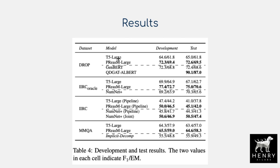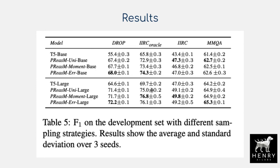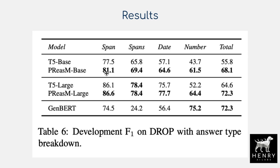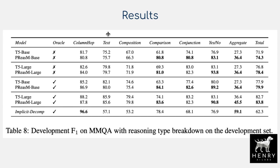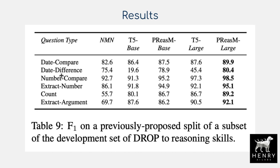Further gains are seen on IRC and MMQA as well, though they vary in magnitude. The paper also breaks down results by reasoning skill type — date, number, spans — and by curriculum learning strategy (momentum averaging vs. error sampling). Additional analysis on MMQA breaks results down by composition, comparison, conjunction, yes/no, and other categories, showing gains specifically on the reasoning tasks the model was trained for, including date comparison, date difference, number comparison, extraction, counting, and argument extraction.